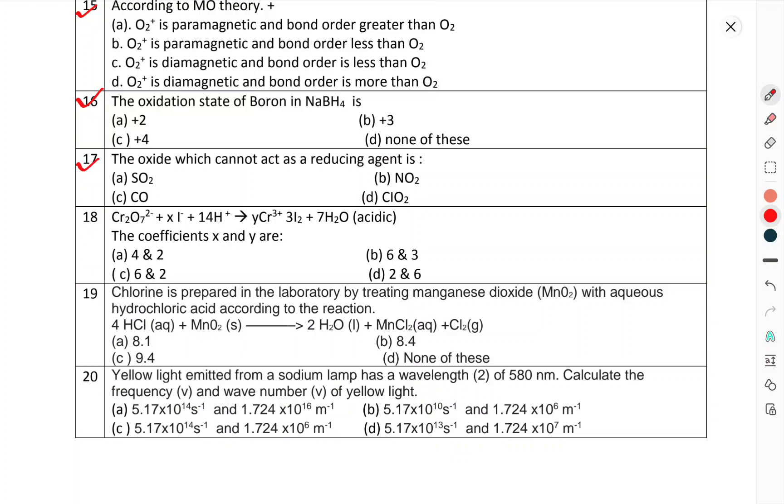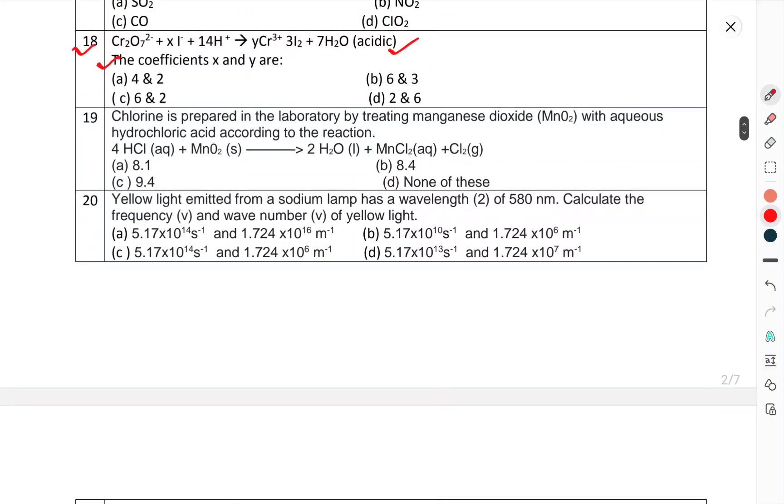Question number 16: Oxidation state of boron in NaBH4 is. Question 17: The oxide which can't act as reducing agent is. Question number 18: The coefficients of x and y are. This is the reaction, coefficient of x and y. Question number 19: Chlorine is prepared in the laboratory by treating manganese dioxide with aqueous hydrochloric acid according to the reaction.